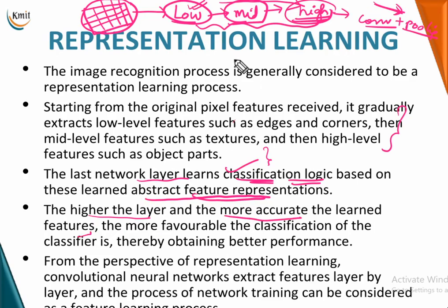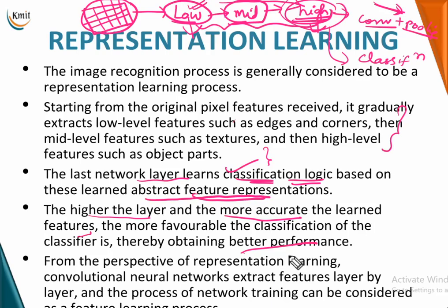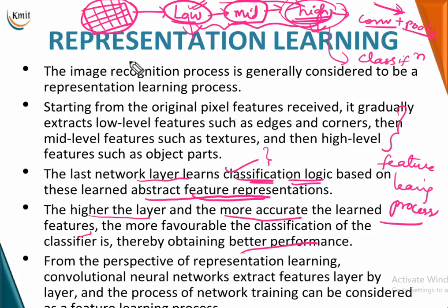The higher the layer, the more accurate the learned features — that is why extraction goes from low-level to high-level features. With more precise features, you get better classification and better performance. From the perspective of representation learning, a CNN extracts features layer by layer through network training, also called the feature learning process.